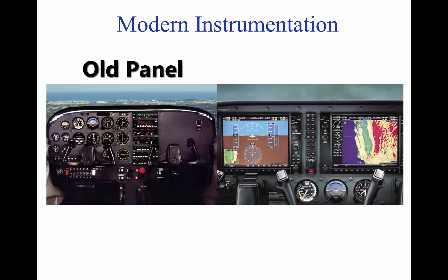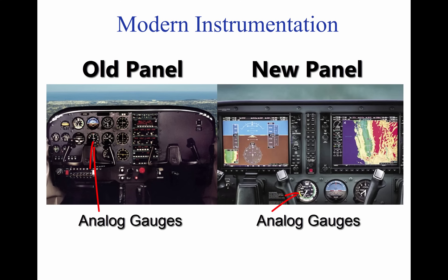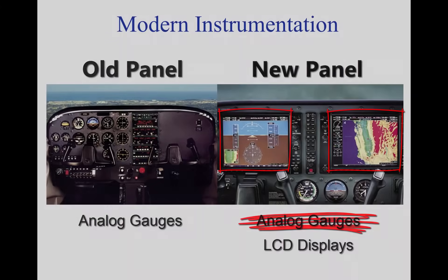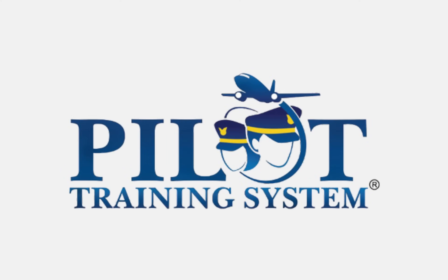Switching out old instrument panels with new instrument panels makes planes safer and more reliable. Old instruments relied on analog gauges to give readings. In more modern aircraft, these analog gauges are replaced with LCD displays that give the pilot more data than the analog gauges and present the information in a more compact layout. We hope you learned a lot. Please help us spread the word about Pilot Training System, and we look forward to further servicing your flight training needs.